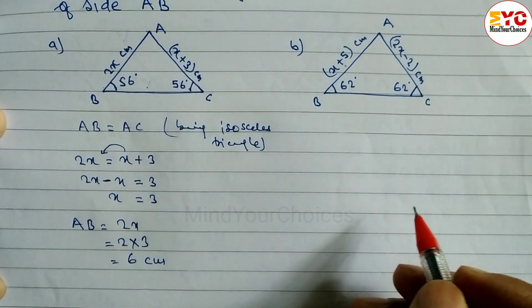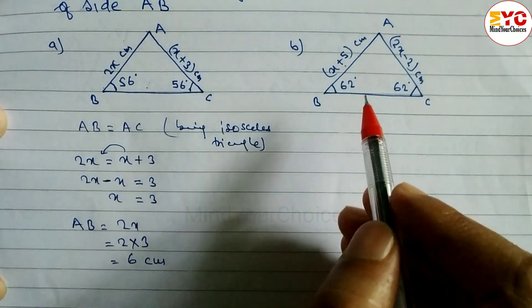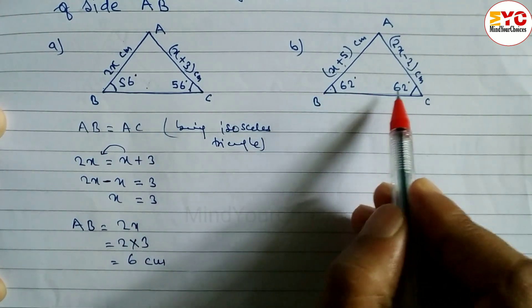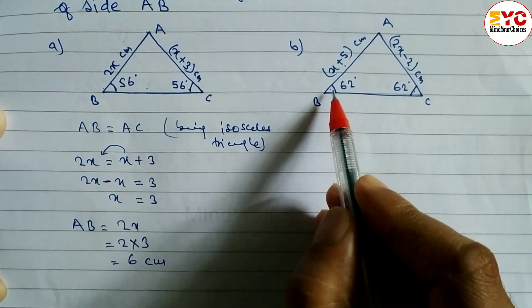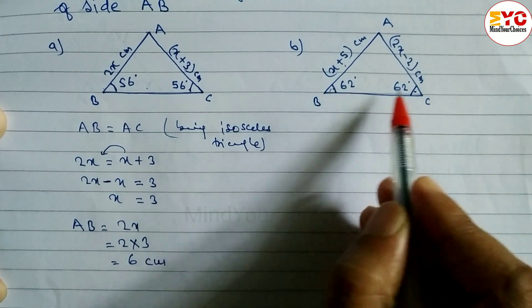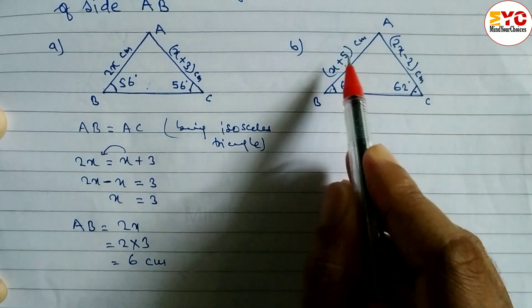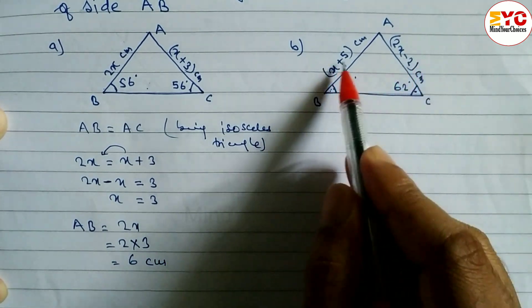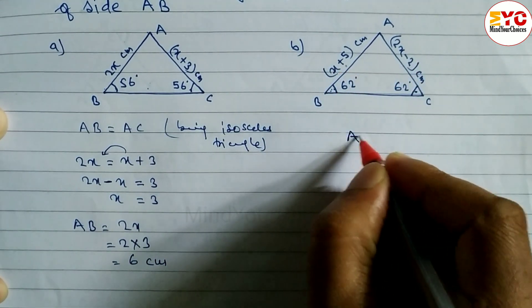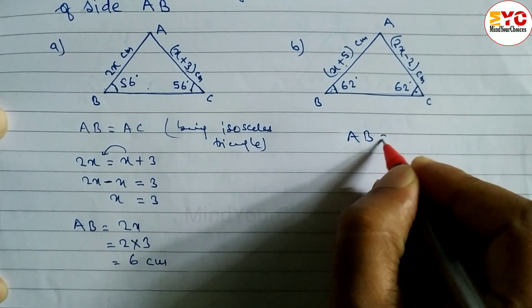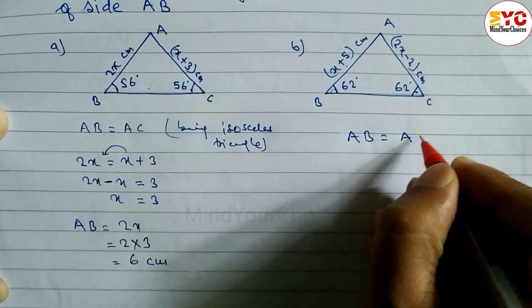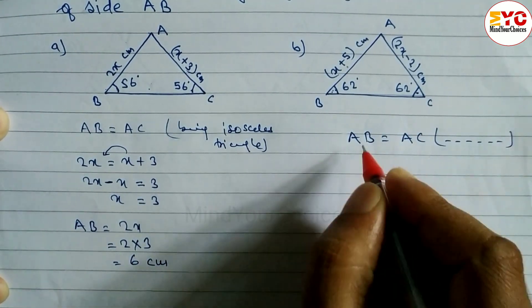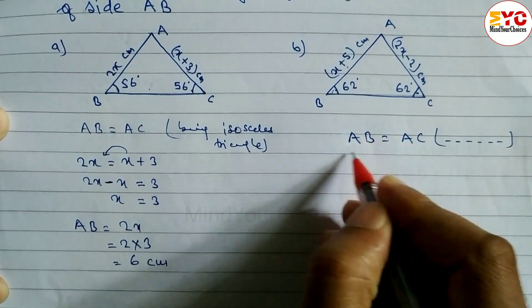Now look at question b. This is also an isosceles triangle because base angles are equal — angle B and angle C are equal. Base angles equal means the corresponding sides are also equal. So we write AB is equal to AC, reason: being an isosceles triangle.